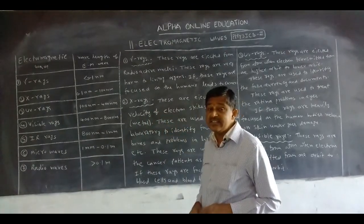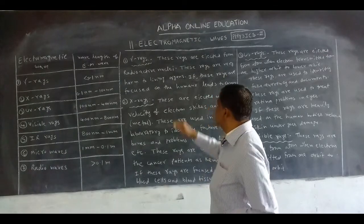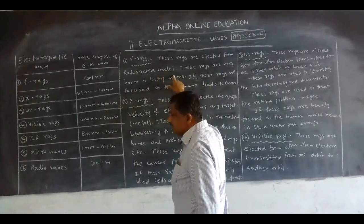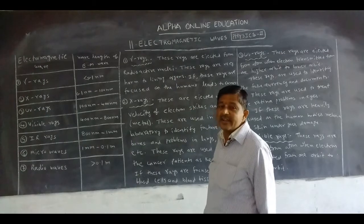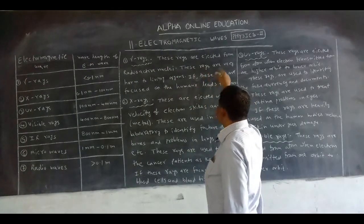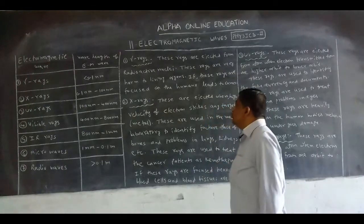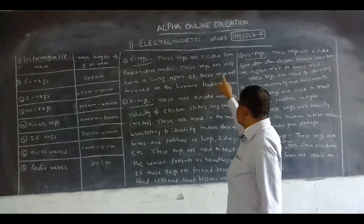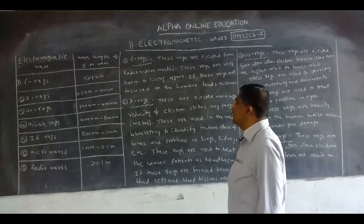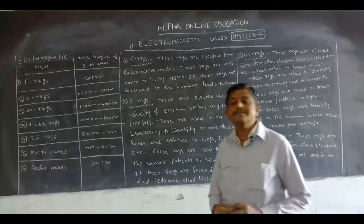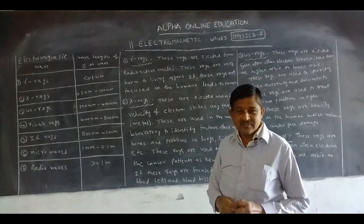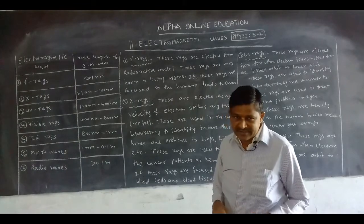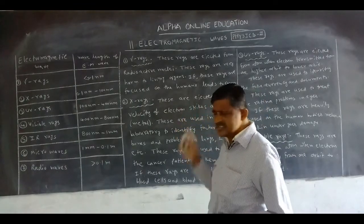Gamma rays are discovered by Henry Becquerel. These rays are ejected from radioactive nuclei. Gamma rays are very harmful to living organisms, especially humans and animals. If these rays are focused on humans, they lead to cancer. Gamma rays are very dangerous and very harmful rays.